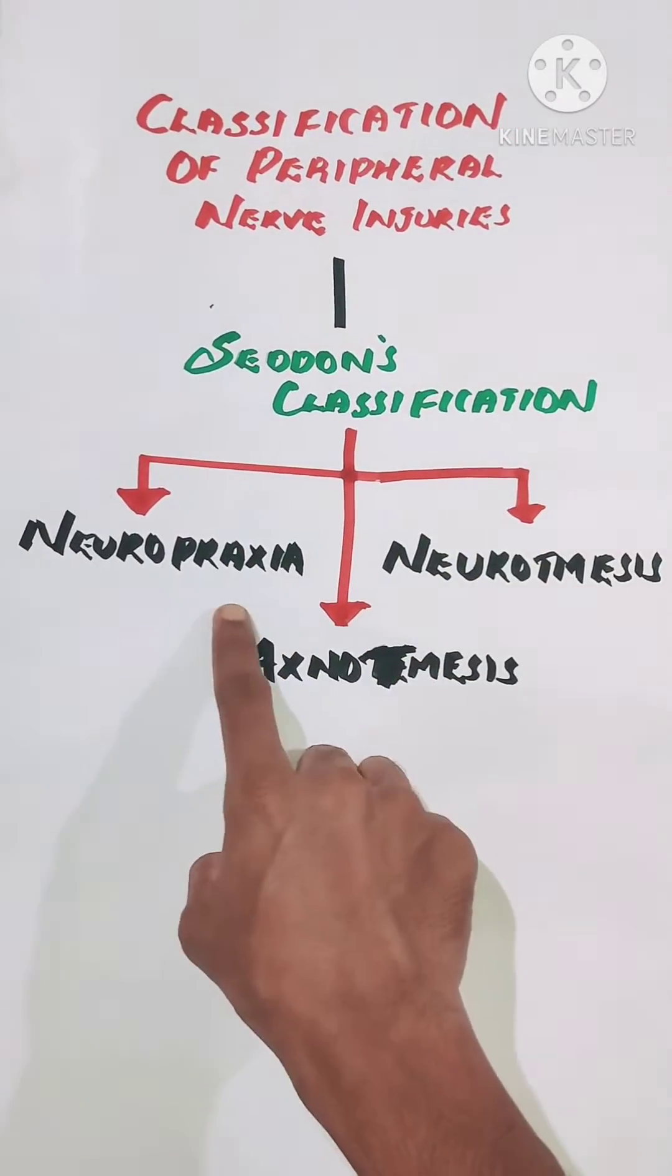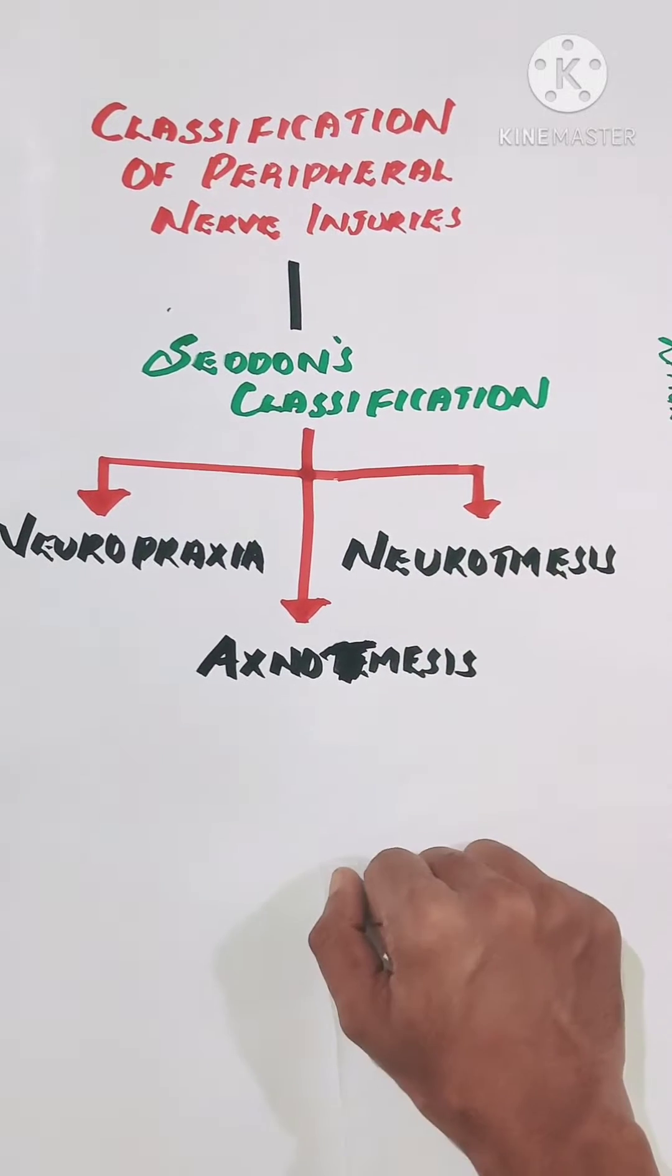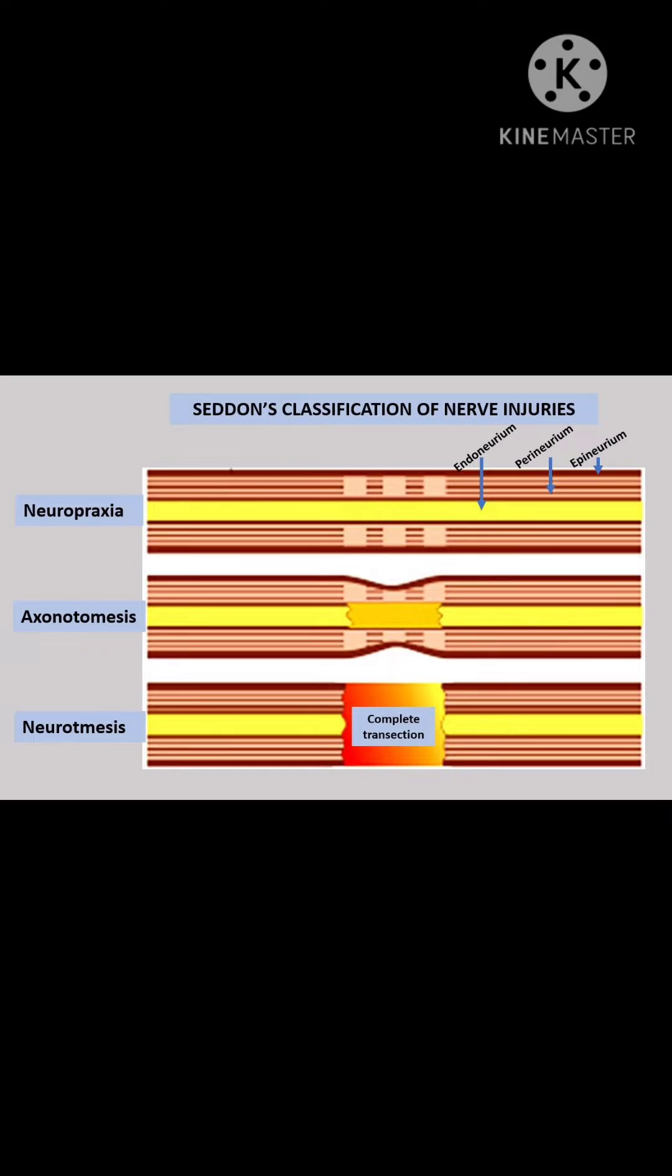According to Seddon's classification, peripheral nerve injuries are divided into three types: neuropraxia, axonotemesis, and neurotemesis.